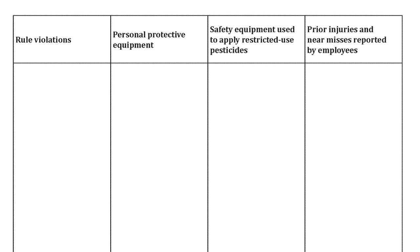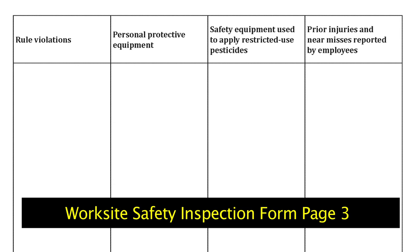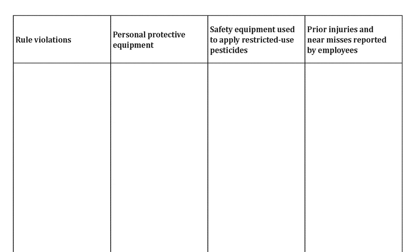The second part of the form lists rule violations. If anyone has violated safety rules — such as smoking in a non-smoking area — you must write that down and talk to that person. Personal protective equipment violations are also listed. Safety equipment used to apply restricted-use pesticides is a separate category. Items like rubber or neoprene gloves must be noted if torn or not working properly. Prior injuries and near misses reported by employees also have a designated spot on the form.